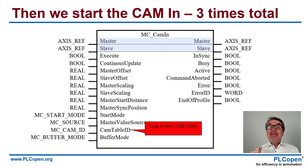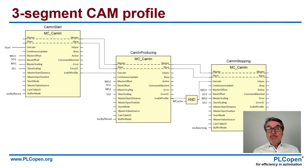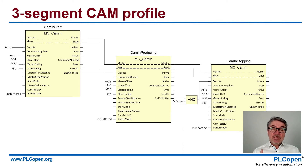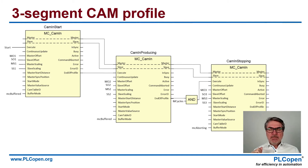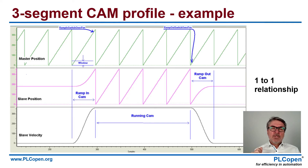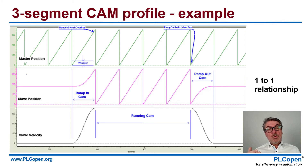We get the link to the CAM table idea coming in from the previous function block. We used it three times in this case to create this profile — you see the CAM_In start, CAM_In producing, and the CAM_In stopping. We use three instances; we could use it with one, but it makes the program unclear. Here you see this link between the master and the slave, which is in a one-to-one relationship.